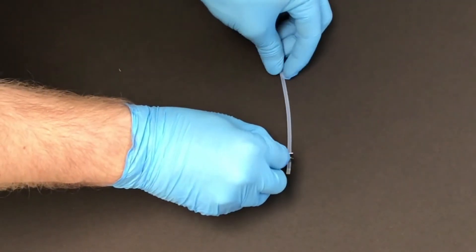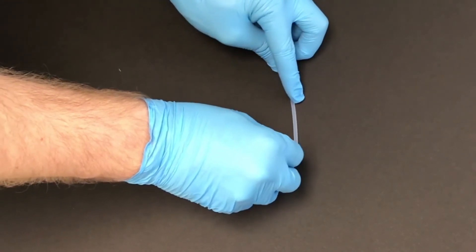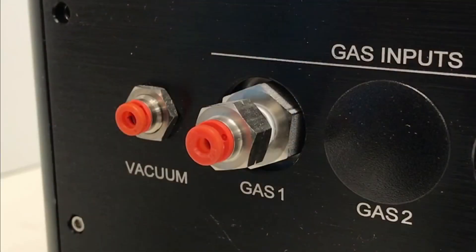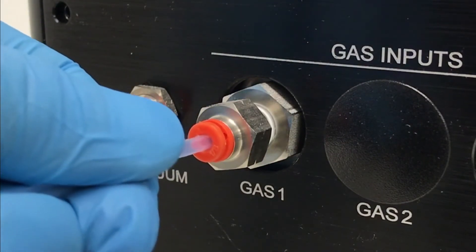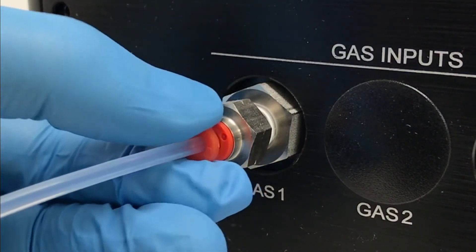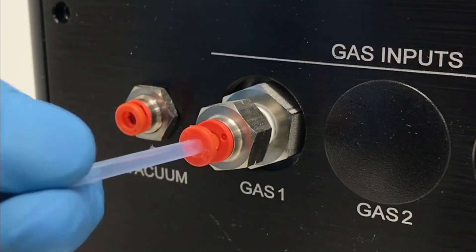Cut the other end of the line to form a clean flat end and fully insert it into the orange connector. Then, pull back on the orange ring to engage the connector and pull back on the line to make sure it is locked in place.